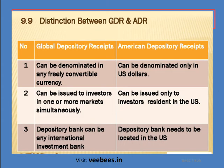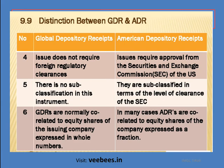Differences between ADR and GDR: GDR can be denominated in any freely convertible currency, but ADR can be denominated only in US dollars. GDR can be issued to investors in one or more markets, but ADR can be issued only to investors resident in the US. In GDR, the depository bank can be any international investment bank, but for ADR the depository bank must be located in the US. GDR issue does not require foreign regulatory clearance, but ADR requires approval from the SEC.